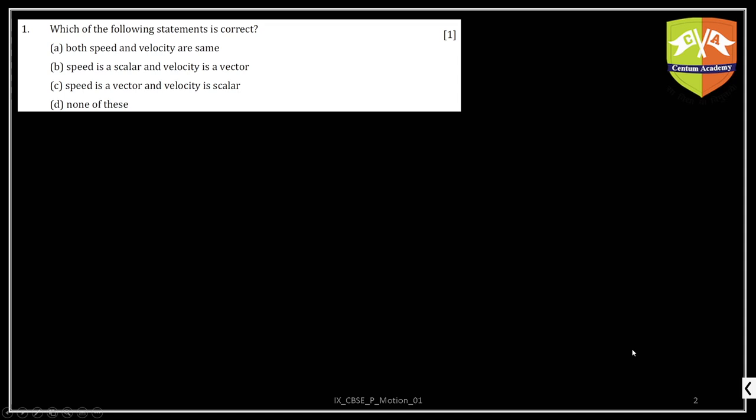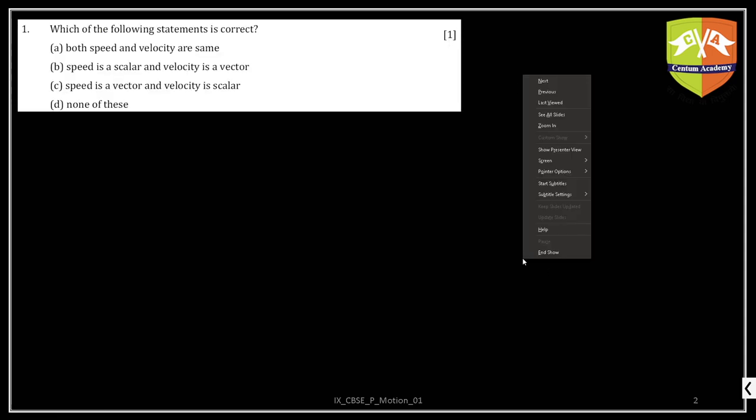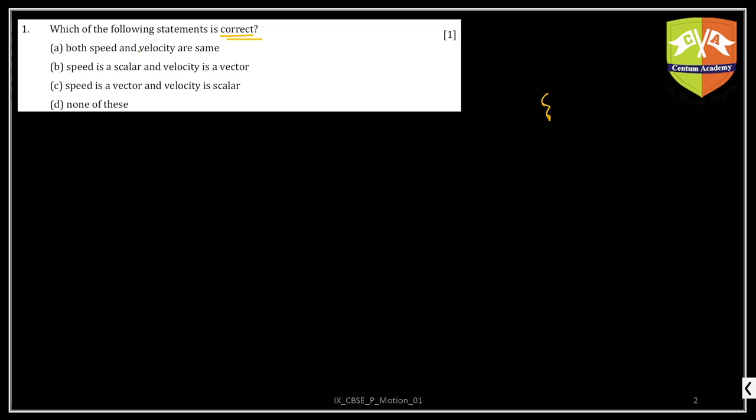Here is the first question: Which of the following statements is correct? Both speed and velocities are same - is it so? No, how can velocity and speed be the same? Then why do we have two different quantities? Speed is a scalar and velocity is a vector quantity. Correct, this is true, so the answer is B.